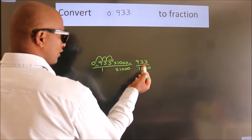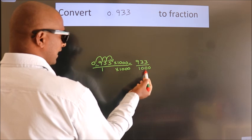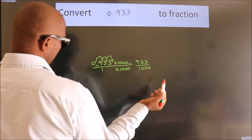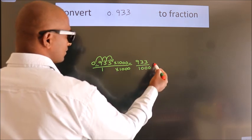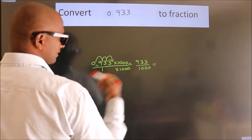This cannot be simplified any further. So, this is our fraction: 933/1000.